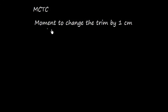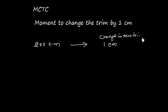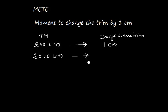Now let us discuss about MCTC, which means Moment to Change the Trim by one centimeter. This is one of the important hydrostatic particulars used in stability calculations. Say suppose 200 ton-meters of trimming moment creates a change in trim of one centimeter. So if there is a 2000 ton-meter trimming moment, then the change in trim will be 10 centimeters.